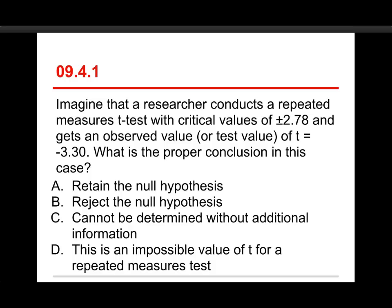The first question is, imagine that a researcher conducts a repeated measures t-test with critical values of plus or minus 2.78, and gets an observed value, or test value, of t equals minus 3.30. What is the proper conclusion in this case? Choices are: retain the null hypothesis, reject the null hypothesis, it can't be determined without additional information, or this is an impossible value of t for a repeated measures test. The answer here is to reject the null hypothesis.